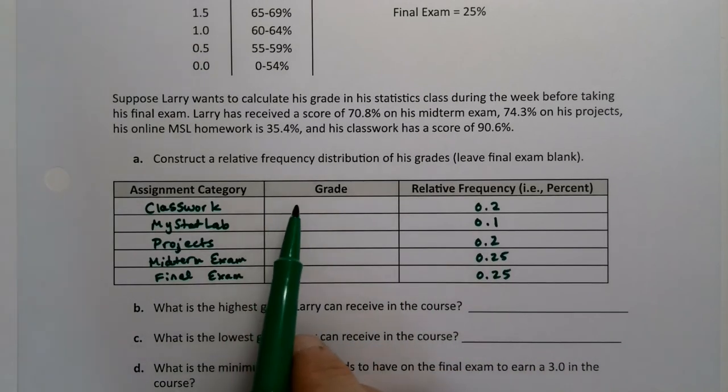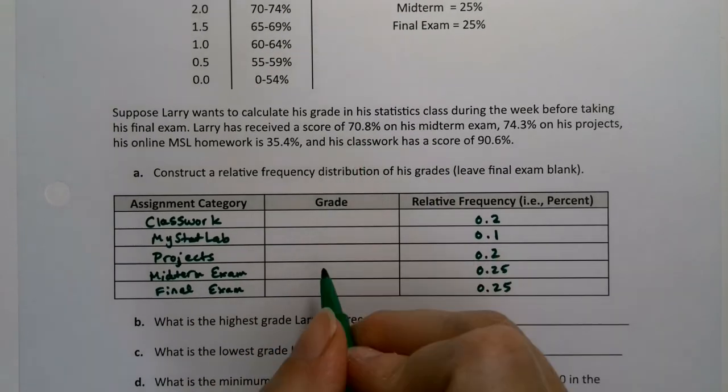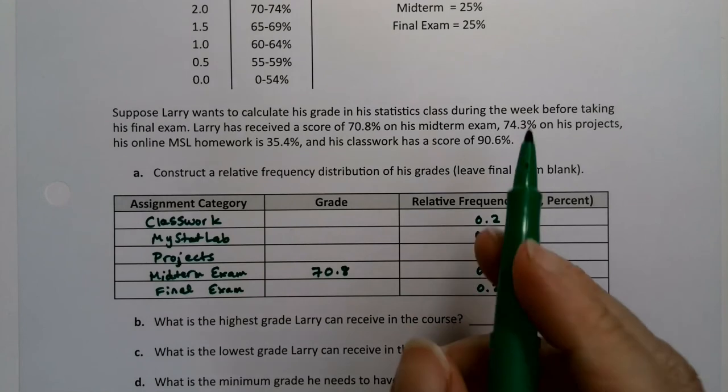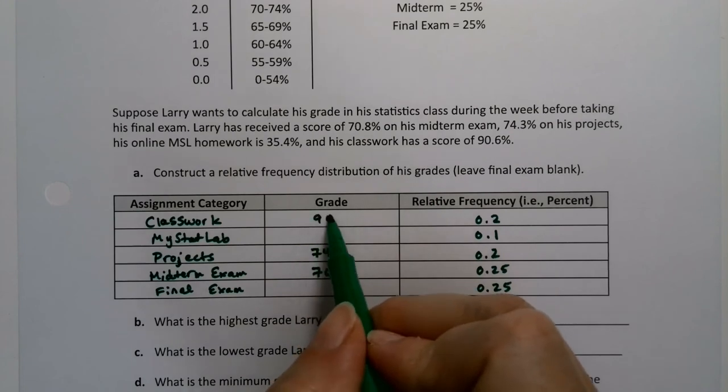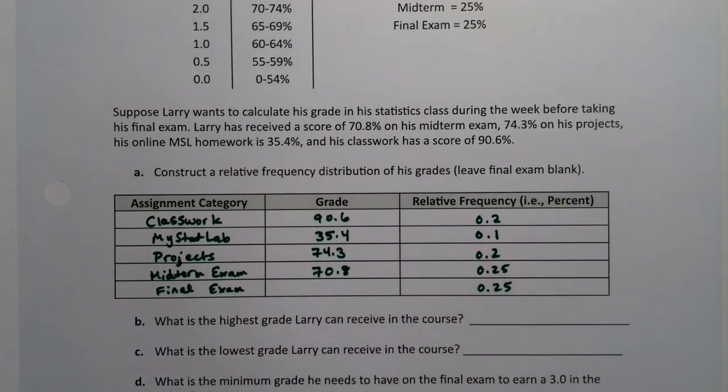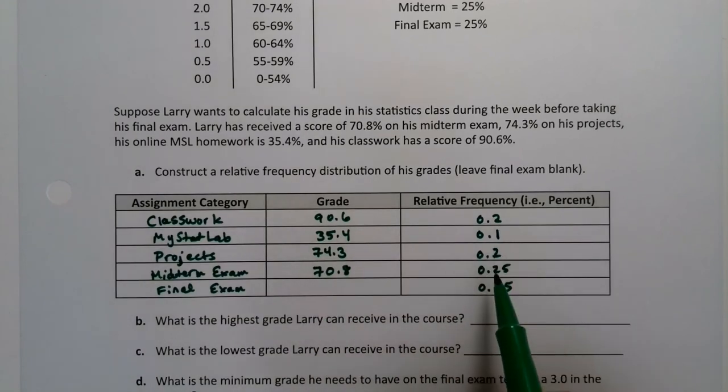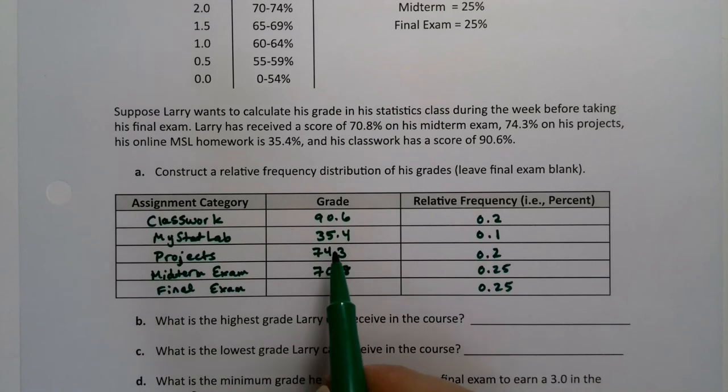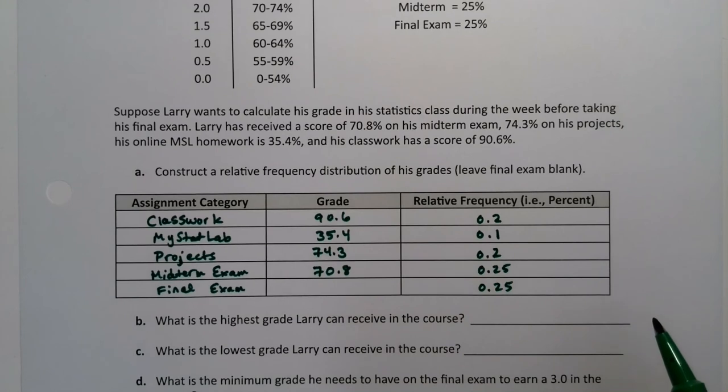Now the grades. He has 70.8 on his midterm, 74.3 on projects, 90.6 on classwork, and 35.4 on MyStatLab. You can make all of these decimals. You can make it 0.906 and 0.354. It's not going to hurt anything. I just find that it's easier to do these ones as the regular numbers and these ones as the relative frequency decimals. If you want, you could do whole numbers for both. You'll just have to move your decimal place for your final result.